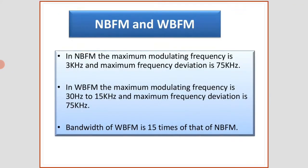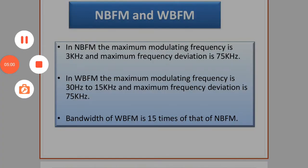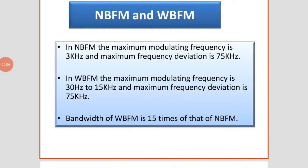In narrow band FM, the maximum modulating frequency is 3 kHz and maximum frequency deviation is 75 kHz. In wide band FM, the maximum modulating frequency is 30 kHz and maximum frequency deviation is 75 kHz. The bandwidth of wide band FM is 15 times that of narrow band FM.